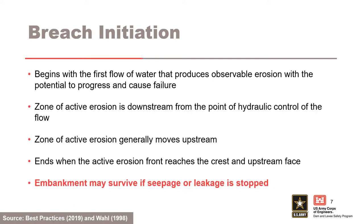The breach initiation phase begins with the first flow of water over or through the dam, levee, or foundation that produces observable erosion with the potential to progress and cause failure. During the breach initiation phase, the zone of active erosion is downstream from the point of hydraulic control of the flow, so outflow rate changes only in response to changes in the driving hydraulic head, not as a result of erosion. As breach initiation proceeds, the zone of active erosion generally moves upstream, such as a head cut or surface erosion during overtopping flow. The breach initiation phase ends when the active erosion front reaches the crest or upstream face of the dam, thereby producing a rapidly accelerating breach outflow and typically unstoppable failure of the dam or levee.